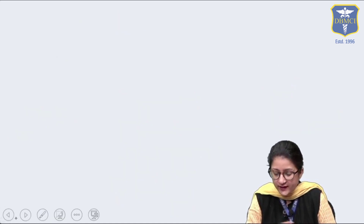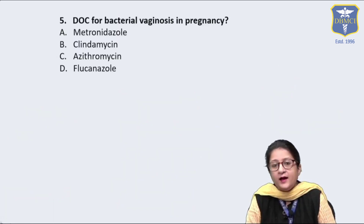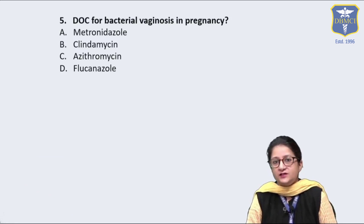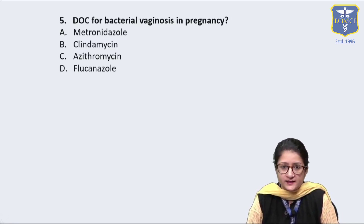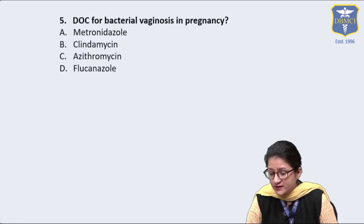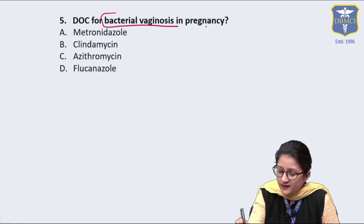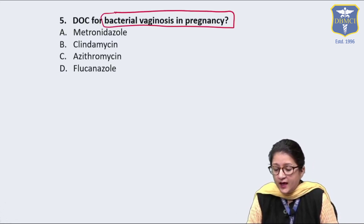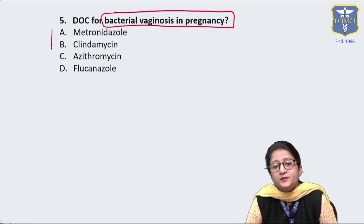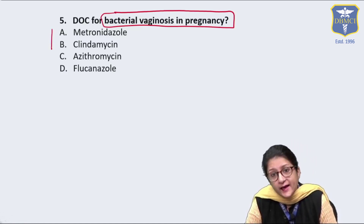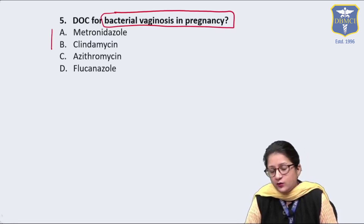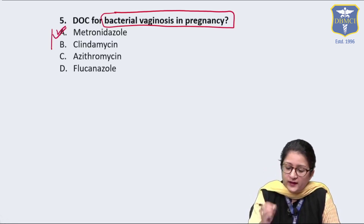Question 5 asks for the drug of choice for bacterial vaginosis in pregnancy. The drug of choice is the same as in non-pregnant women — metronidazole. Many students get confused between metronidazole and clindamycin, but metronidazole is the first choice.